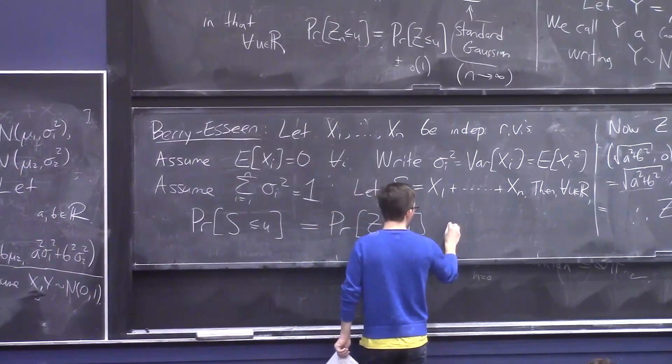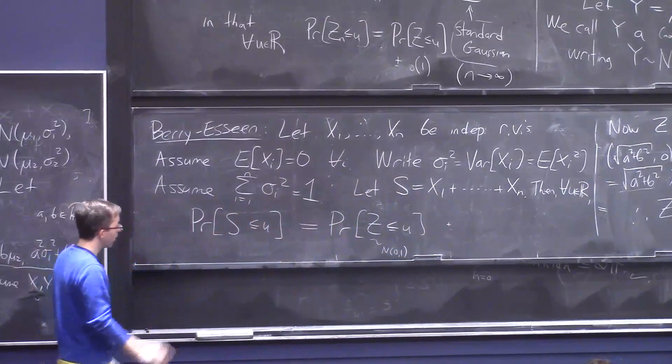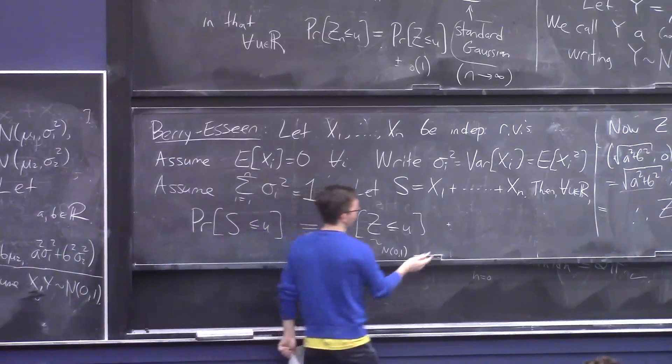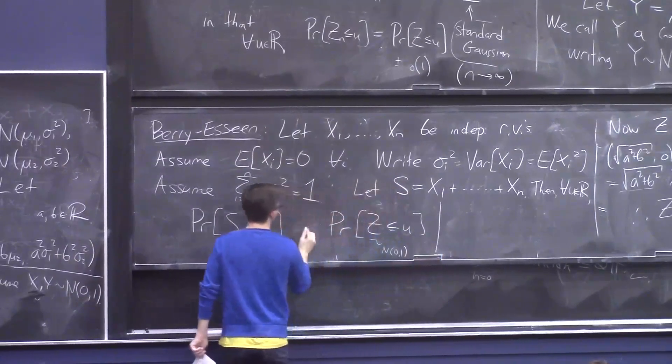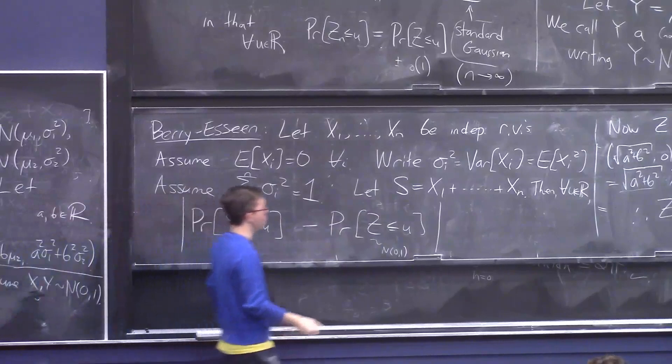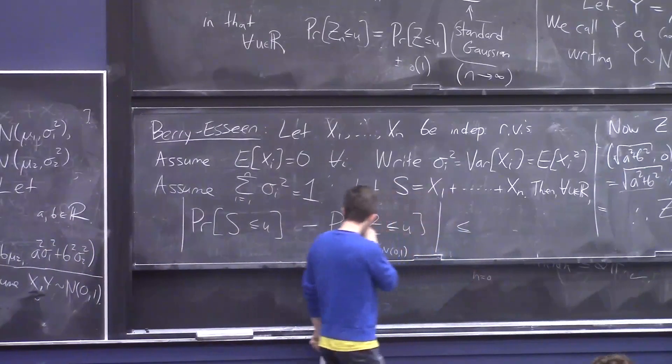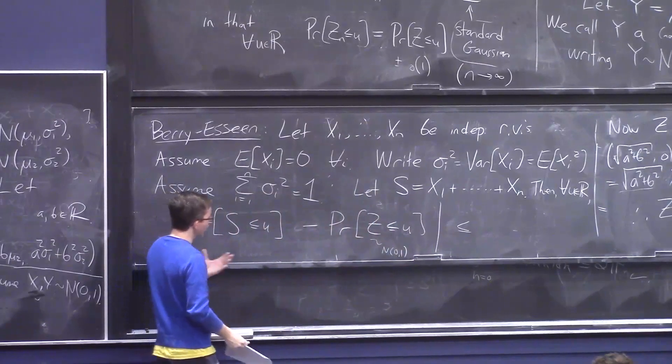Up to a small error. So, in the central limit theorem, we just wrote, like, plus little of one. But now I'll tell you an explicit error rate. And I guess the easy way to write it is instead do this. So, the difference between these two numbers is at most something that's hopefully small.